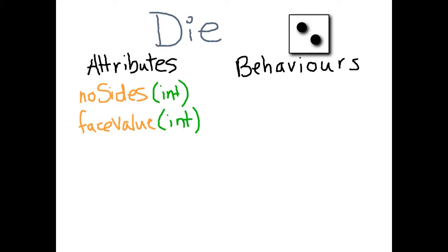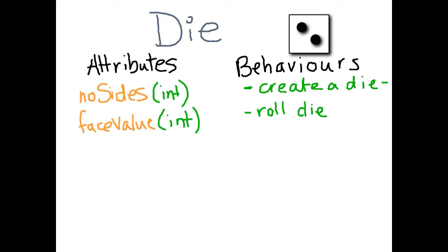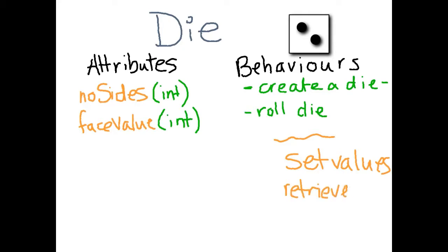In terms of behaviors, we can create the die — the creation of an object is a behavior that applies to every object, you have to create it in order to use it. You can also roll the die to get a new face value. When we write an object, we typically write a number of methods for controlling the behavior of the object. Some of those methods are to set values and other methods are used to retrieve values, because the information is contained within that object and we can't just refer to the number of sides directly from our program.